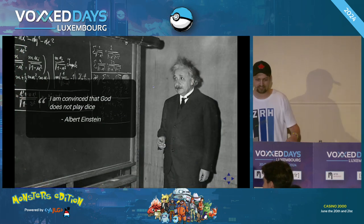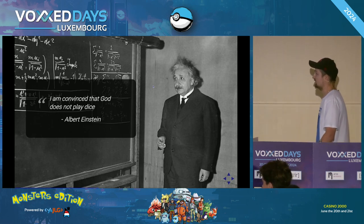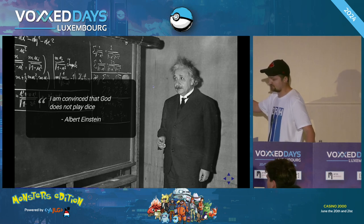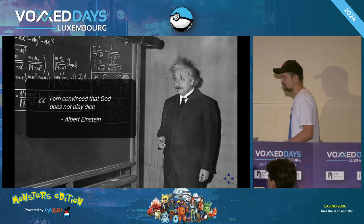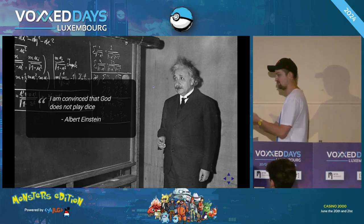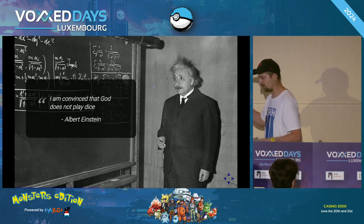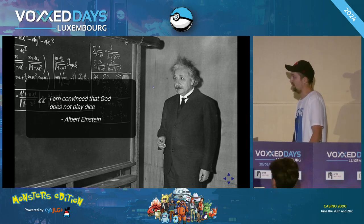Einstein hated all of this — he hated quantum mechanics even though he contributed greatly to it. He hated this quantum state collapse and the randomness built into the fabric of reality, because he wanted a world where everything is deterministic: if you know all the forces acting on something, you can precisely predict what it will do. That is just not the case with quantum mechanics. When Einstein voiced this, Niels Bohr responded: 'Einstein, don't tell God what to do.'